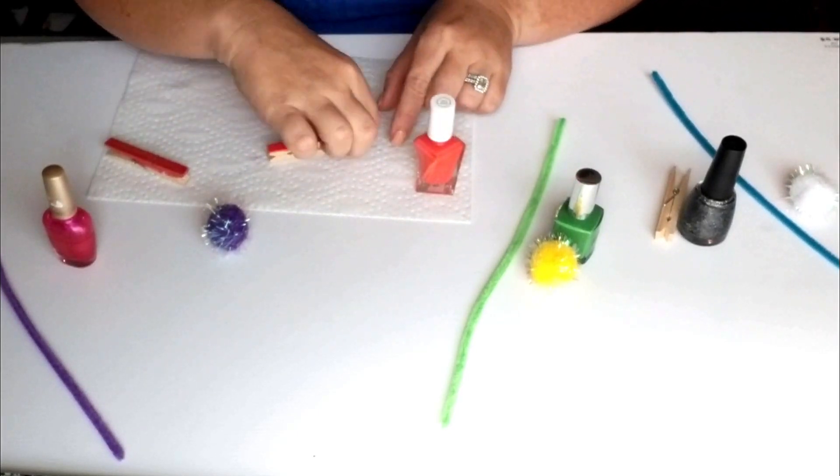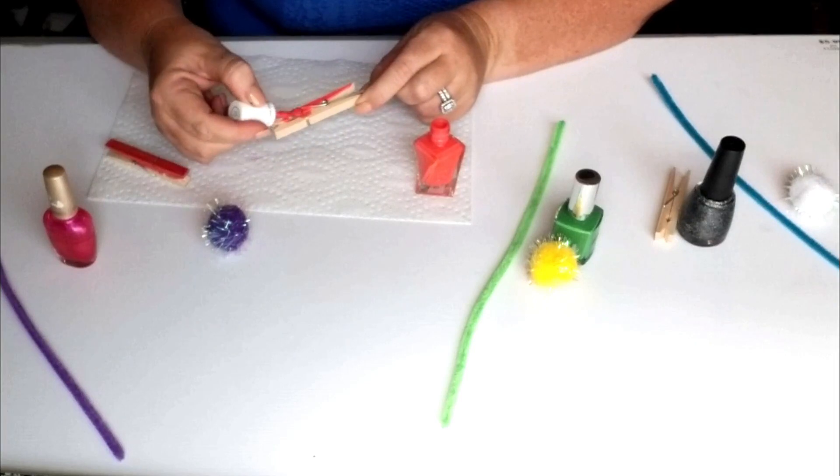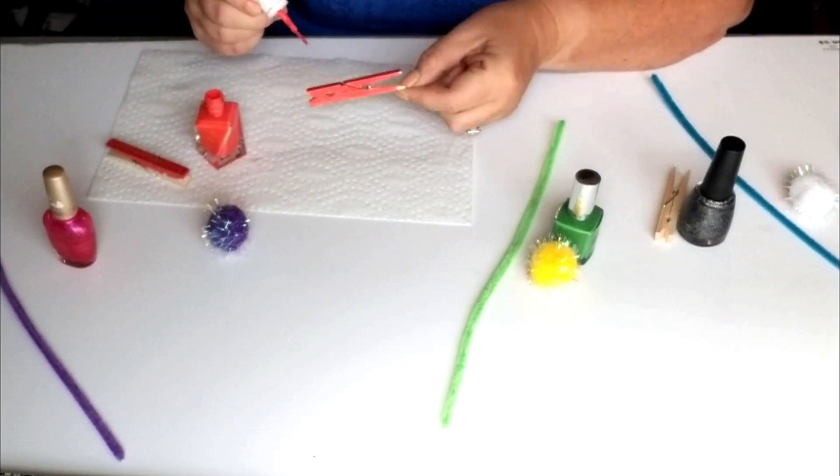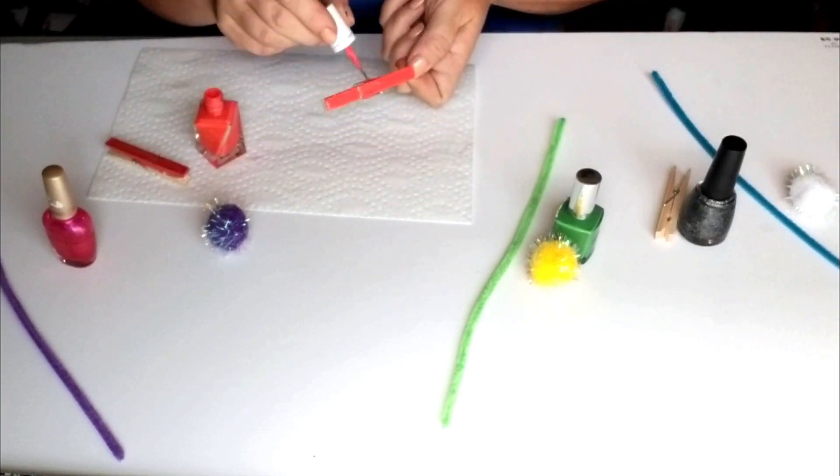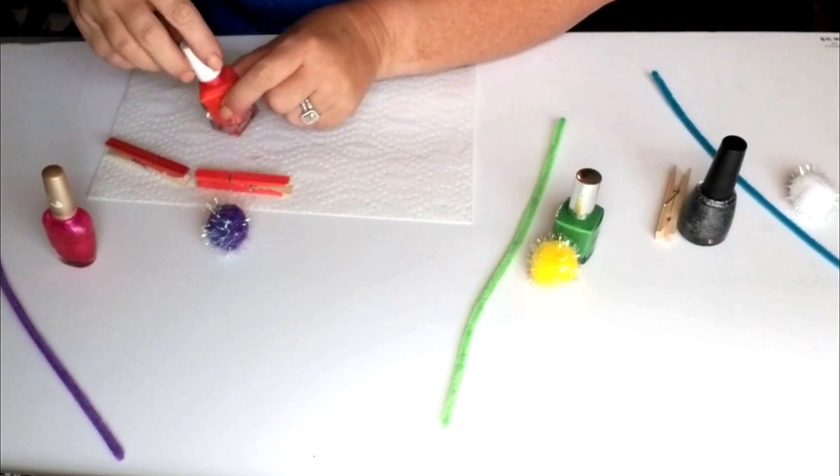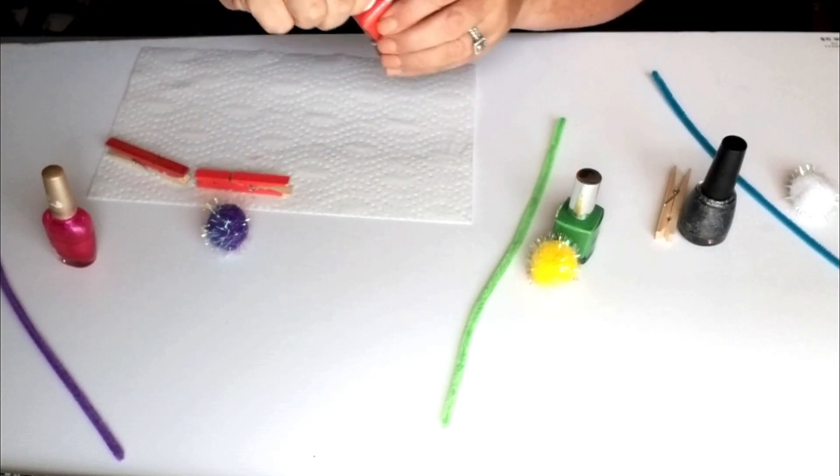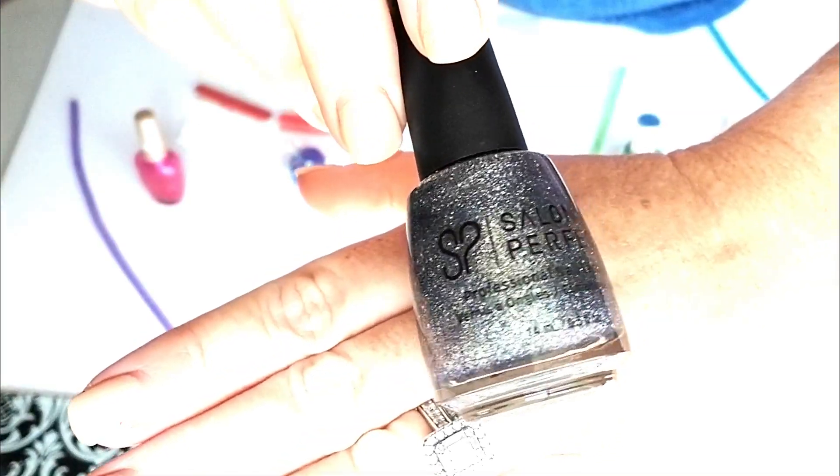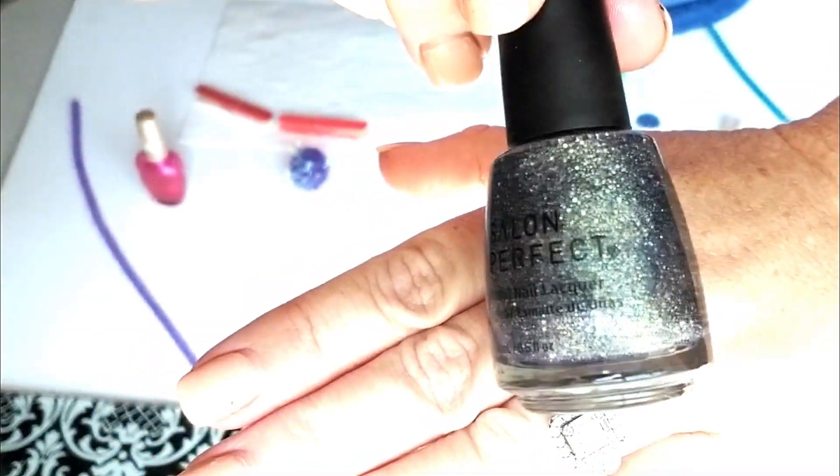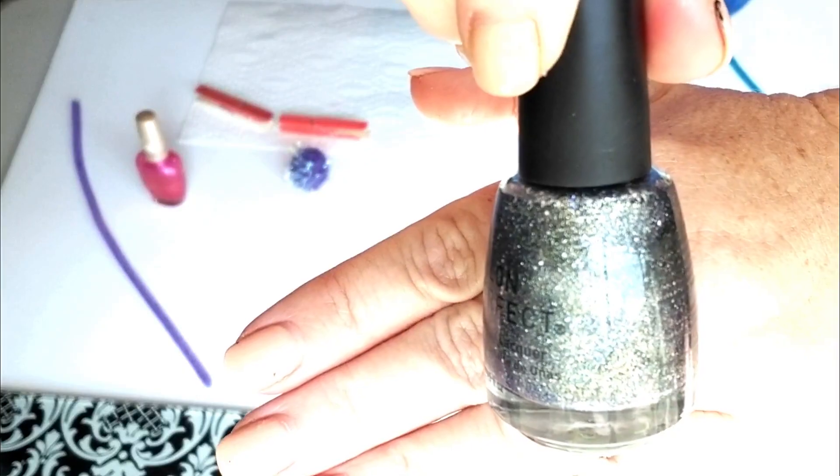Now in a minute I'm going to show you how to take these clothespins apart and paint them separately if you don't like the way I'm painting them right now. This fingernail polish is Salon Perfect and it is in the color Far Away Galaxy.